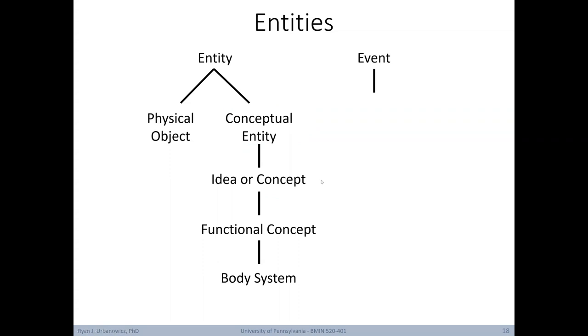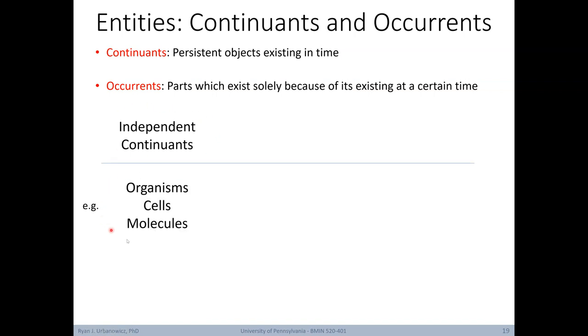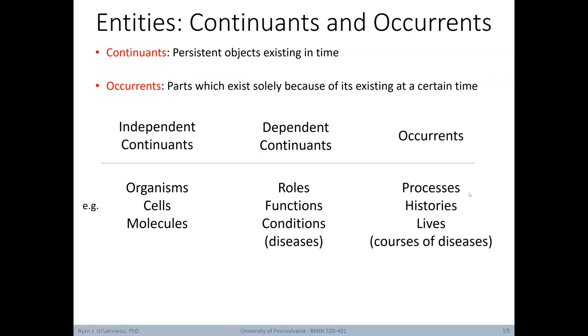Diving deeper into conceptual entities, these can include things like an organism attribute, a finding, an idea or concept, an occupation or discipline, organization, and so on. In biological ontologies, conceptual entities usually include ideas or concepts, functional concepts, or body systems. It's worth reiterating that an entity and a concept isn't strictly the same thing. Another way to break down entity types is to define them as continuance and occurrence. A continuant is a persistent object existing in time. Differently, an occurrence refers to parts which exist solely because of its existing at a certain time. There are two types of continuance. The first are independent continuance, which can refer to things like organisms, cells, or molecules. Next, we have dependent continuance. These can include things like roles, functions, or conditions, such as diseases. And lastly, occurrence can refer to things like processes, histories, or lives, which can describe the course of diseases.